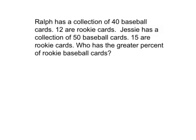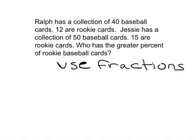There are two different ways that we can go ahead and compare these data sets. One of those is to go ahead and use fractions. In using fractions, what we'll do is write a fraction for Ralph's collection: 12 rookie cards, which is part of the whole, over 40, which is the total number of cards that Ralph has.